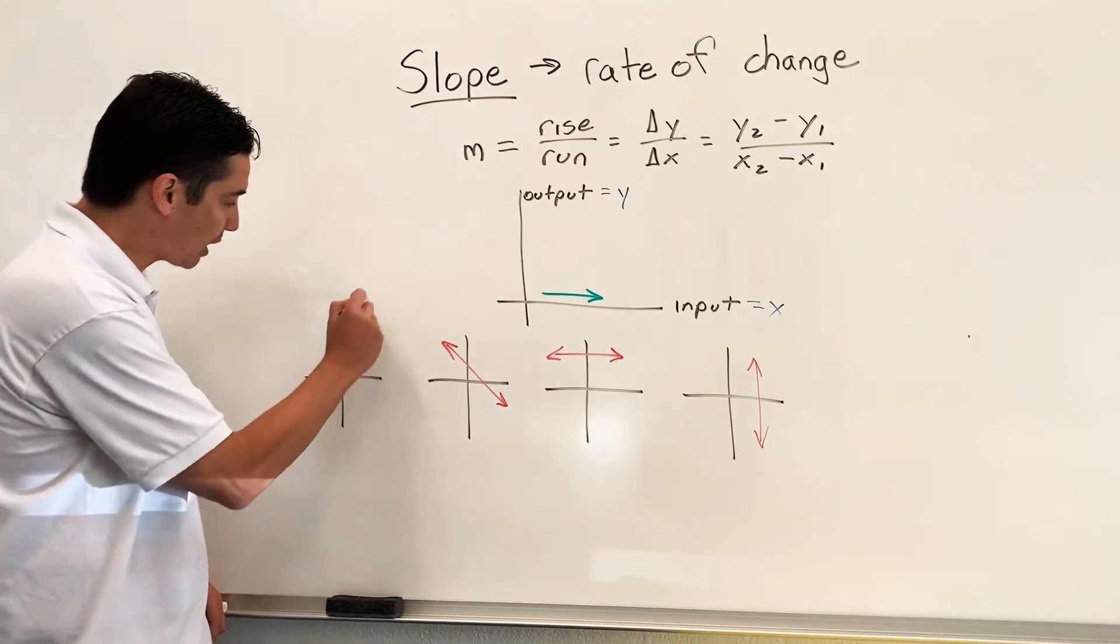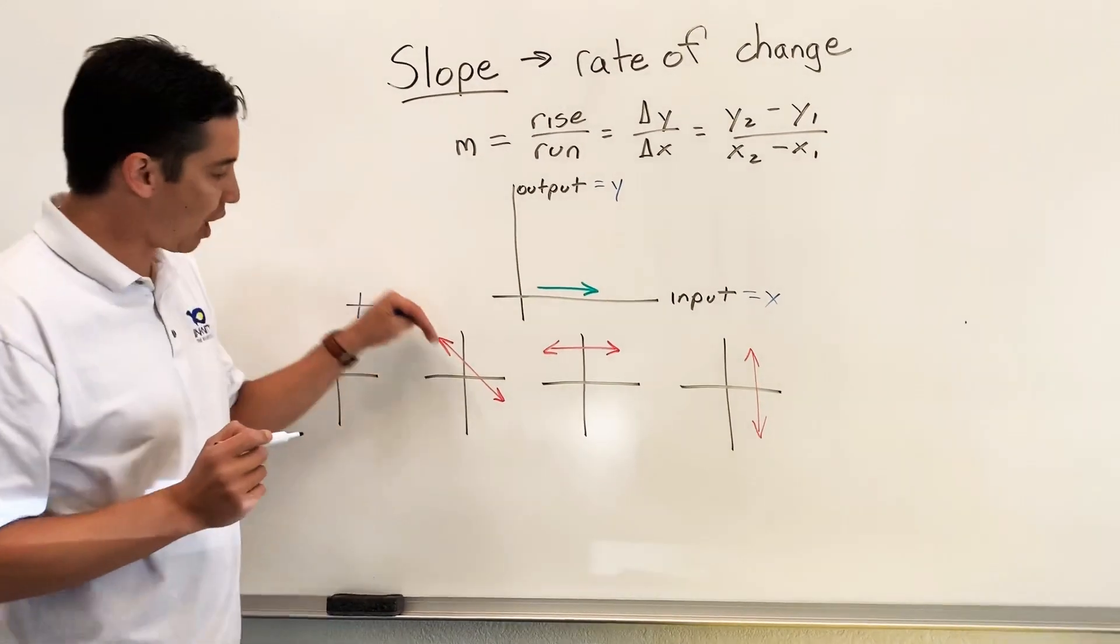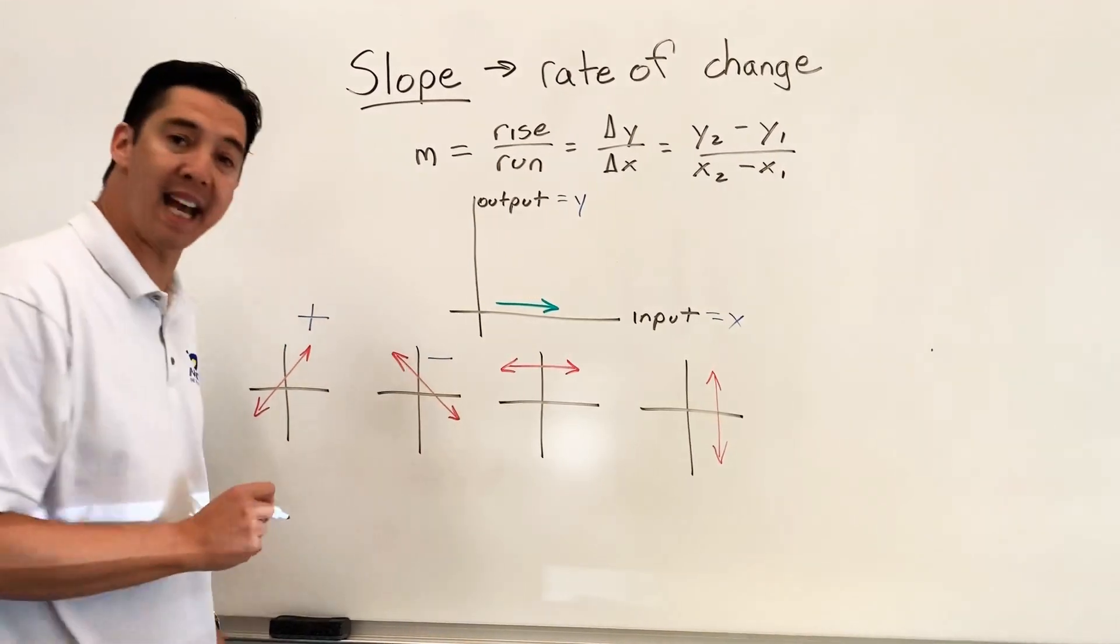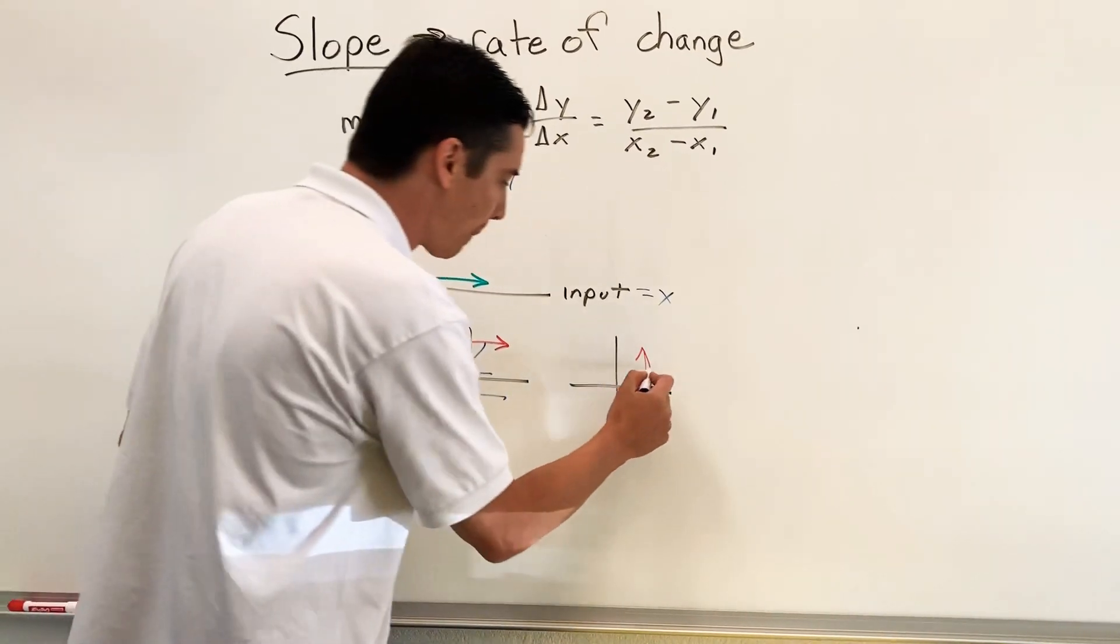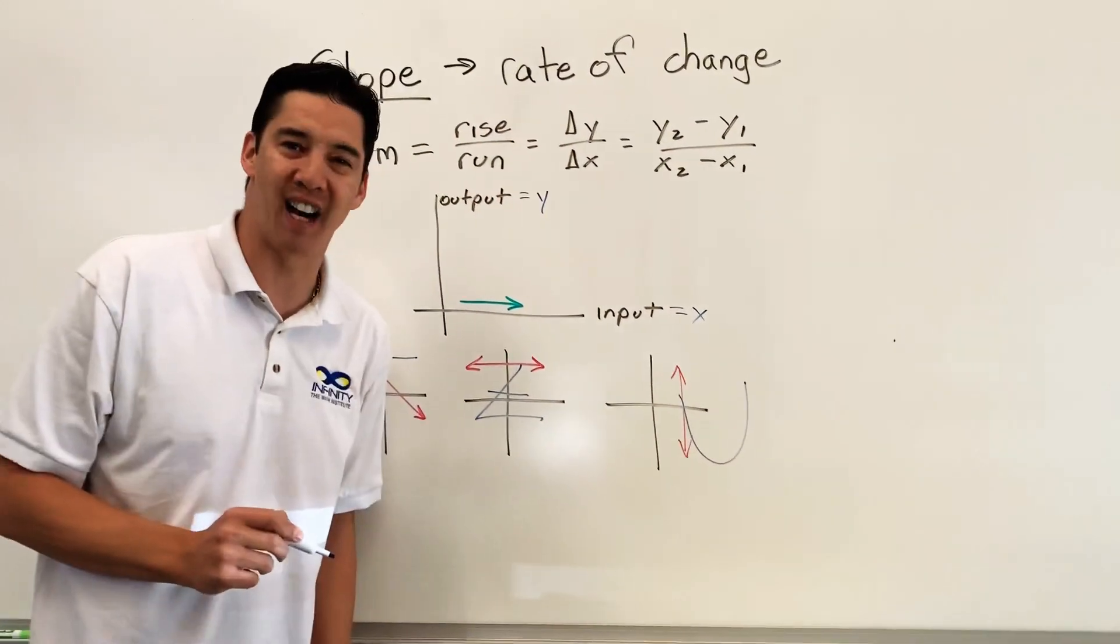If it's going up, the slope is positive. If it's going down, the slope is negative. If the slope is horizontal, it's zero. And if the slope is up and down, it's undefined.